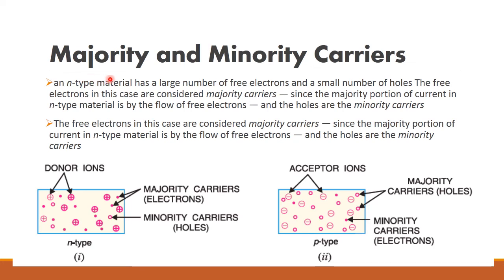Next, let us see what are majority and minority carriers. In N-type material, there are a large number of free electrons and only a small number of holes. The large number of free electrons are the majority carriers, and the small number of holes are the minority carriers. In P-type semiconductor, there are more holes but fewer electrons — so holes are the majority carriers and electrons are the minority carriers.